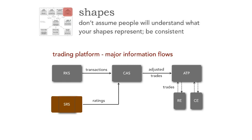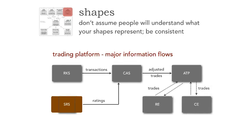Now about shapes — we have very few standards in our industry regarding shapes. Some people use rectangles, some use circles. Notice RE and CE have different shapes on the diagram — that must be significant? No, they just wouldn't fit on the screen. So watch for consistency as well. There's nothing special about the RE and CE systems; I just happened to draw them underneath ATP. This misleads people into thinking they're different, so be consistent in your shapes.